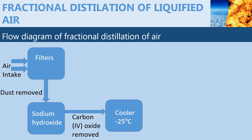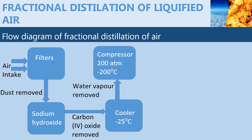The remaining part of air is compressed under 200 atmospheres and then further cooled to negative 200 degrees Celsius. This is done by compressing the air and allowing it to expand repeatedly, essentially reducing the temperature.